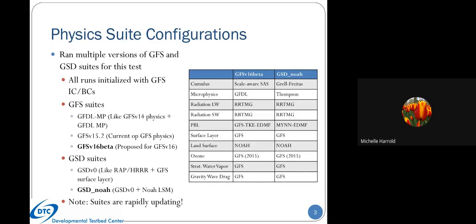The physics suites we ran are listed below. We ran three GFS-based physics suites, but for time constraints I'll be focusing on results from the GFS version 16 beta suite. We also ran two GSD-based suites, and I'll be focusing on what we're referring to as GSD NOAA—a GSD v0, very RAP-like configuration. We did swap out the LSM to be using NOAA, and we initialized all our runs with GFS ICBCs. We noticed a strong sensitivity to the land surface model used.